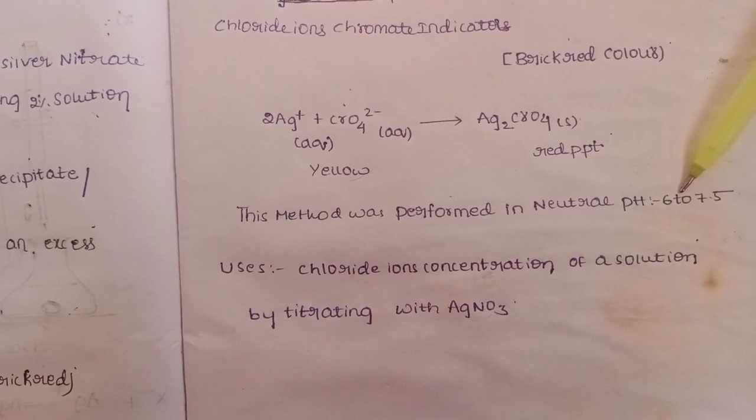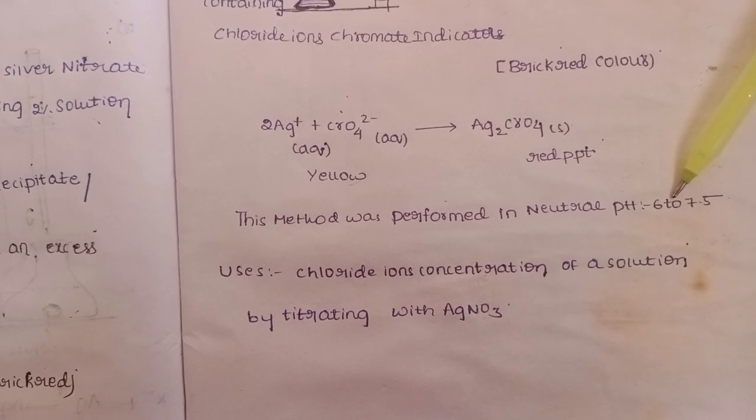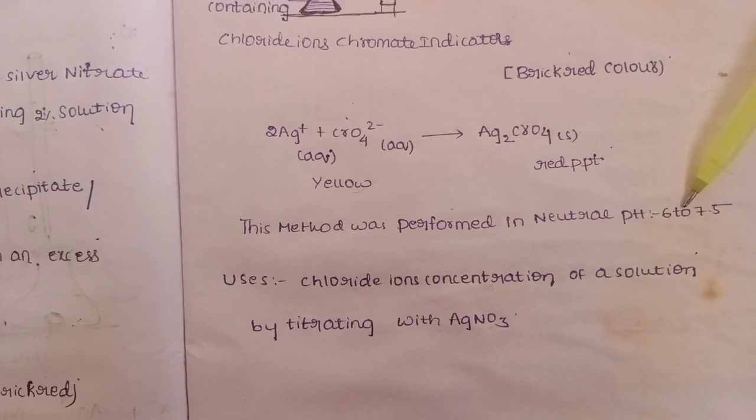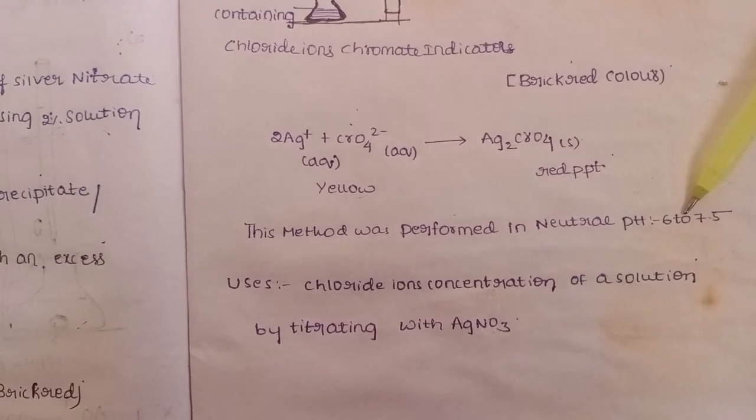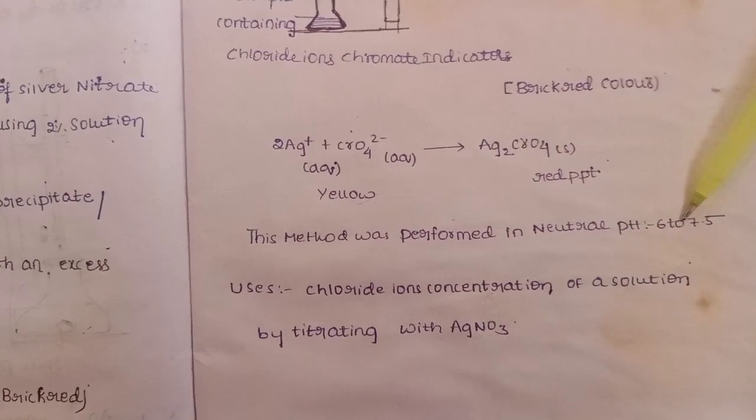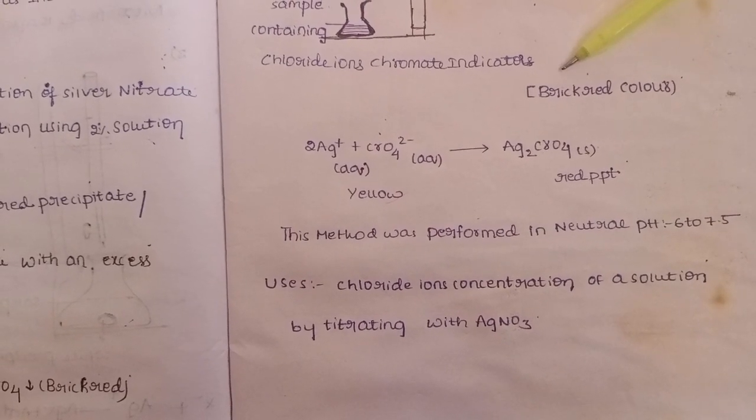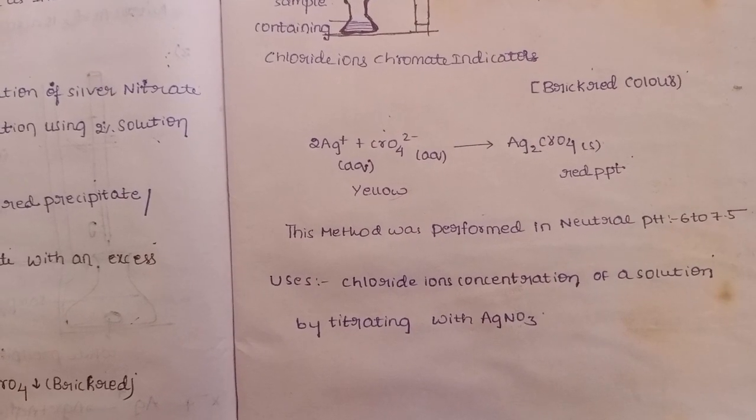This method is used for chloride ion determination. Chloride ion concentration of 0.1 to 0.5 molar can be determined using this method.